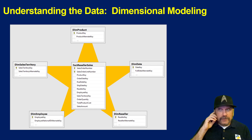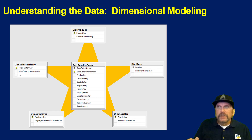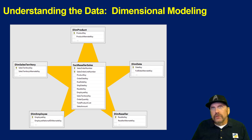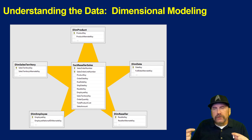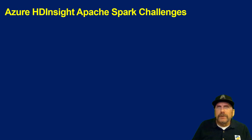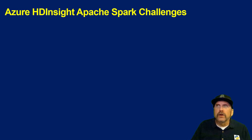We're using a dimensionally modeled set of data — roughly dimensional — of the AdventureWorks. This shows facts reseller sales, but it's really going to be fact internet sales. The same idea: you've got the core numeric data, that's your facts, the metrics, and then the descriptive things — what, when, where, how — that's your dimensions. They have just one layer out, one key that brings you to the dimensions. That's a dimensional model. Redundancy is okay in dimensional modeling; unlike relational modeling, you don't want redundancy, but you can have it here.